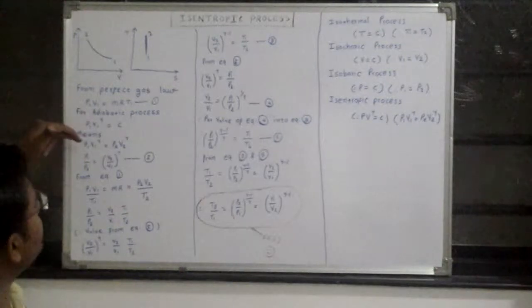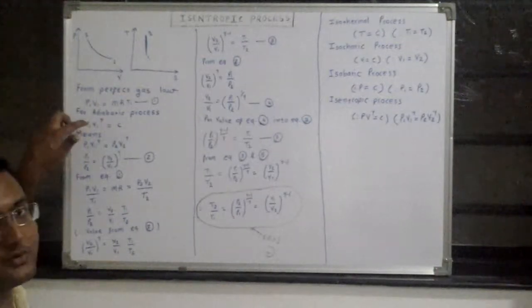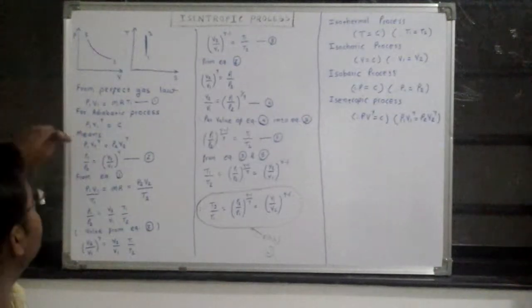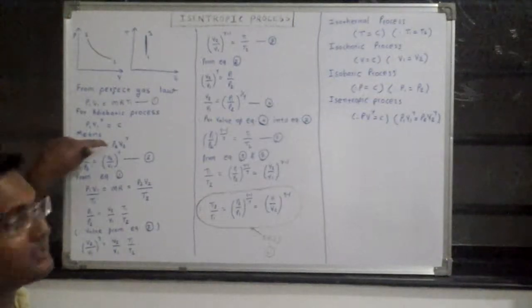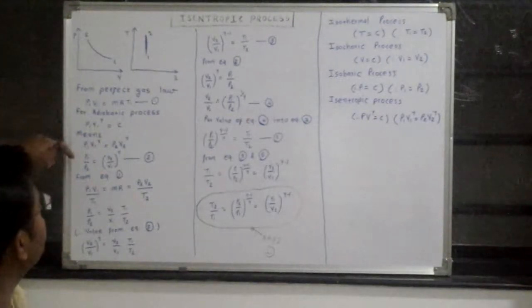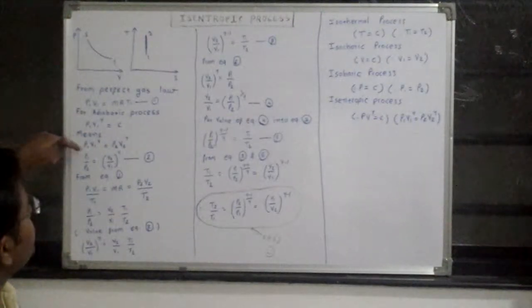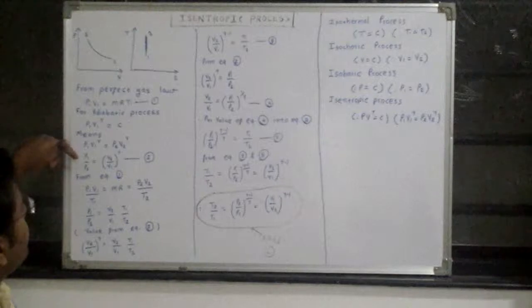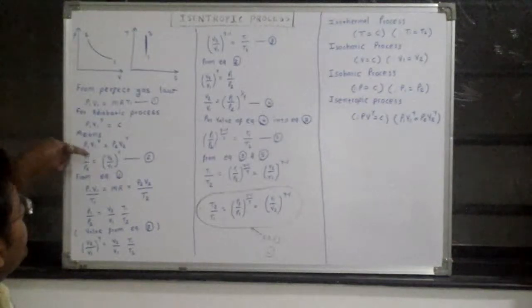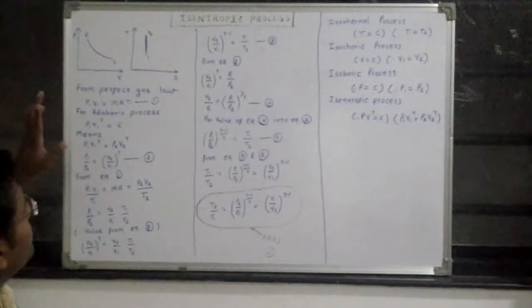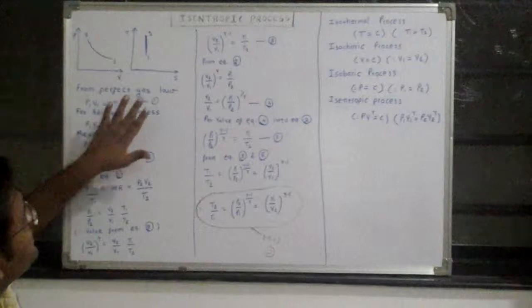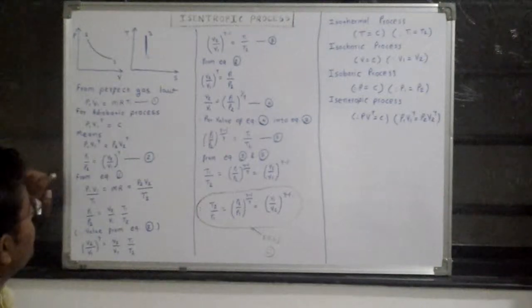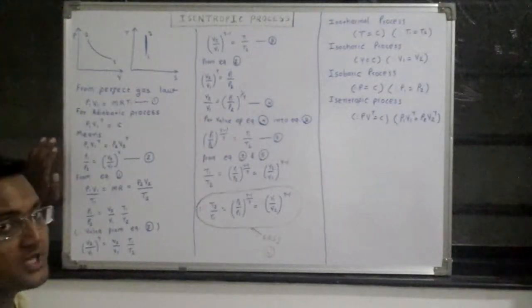For point number 1 and point number 2, the product remains the same: P1V1 raised to gamma equals P2V2 raised to gamma. From this equation, we get P1 divided by P2 equals V2 by V1 raised to gamma. This is equation number 2, and the perfect gas law is equation number 1.